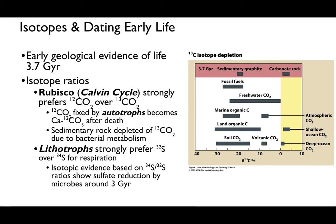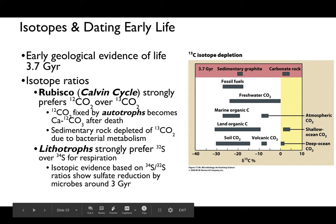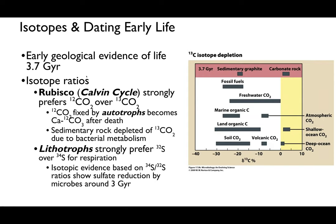If you see a depletion of carbon-13 relative to carbon-12, you can assume autotrophic life was present. Similarly, lithotrophs prefer sulfur-32 over sulfur-34. Looking at isotopic evidence of sulfur tells us that sulfate reduction, a metabolism we'll discuss later, originated about three billion years ago—making it a very, very old metabolism.